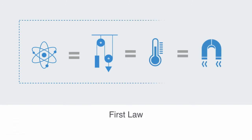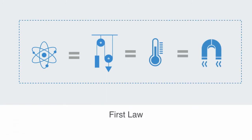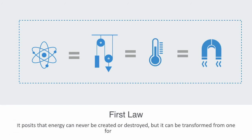The first law, in its generalized sense, is a statement of the conservation of energy and matter. It posits that energy can never be created or destroyed, but it can be transformed from one form into another. This implies that the total energy of an isolated system remains constant over time. The first law tells us about the flow of energy within a physical system, and that we can trace this transformation from one form to another through the system.